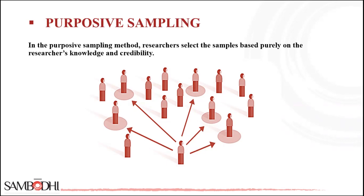The sample being studied is not representative of the population, but for certain qualitative and mixed method research designs, this is not an issue. Common purposive sampling techniques include heterogeneous sampling (maximum variation), homogeneous sampling, typical case sampling, extreme or deviant case sampling, critical case sampling, and expert sampling. These can be used on their own or in combination with other purposive sampling techniques.